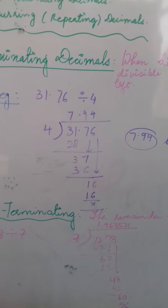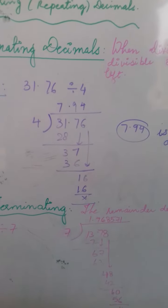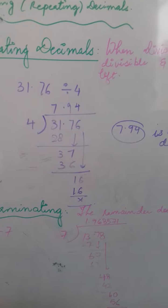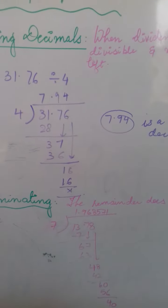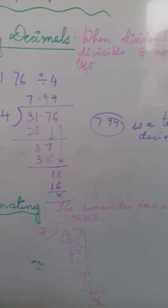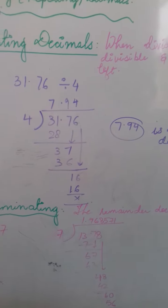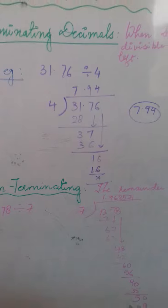So, 4 7s are 28, then decimal, then 4 9s are 36 and 4 4s are 16. No remainder is left. It is completely divisible. This is an example of terminating decimal.